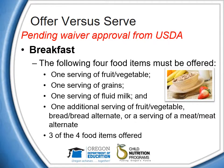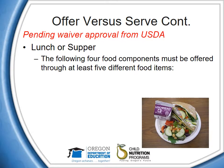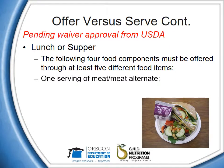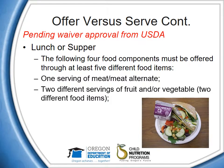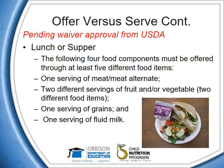A child must take at least three of any four food items offered at breakfast. For lunch or supper, the following food components must be offered through at least five different food items: one serving of meat or meat alternate, two different servings of fruit and/or vegetable from two different food items, one serving of grains, and one serving of fluid milk. Lunch or supper OVS requirements differ from breakfast in that a child must take at least three food components rather than items from the five food items offered. Three food components are required for an adequate, nutritious meal for children.